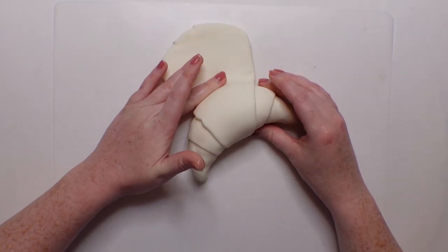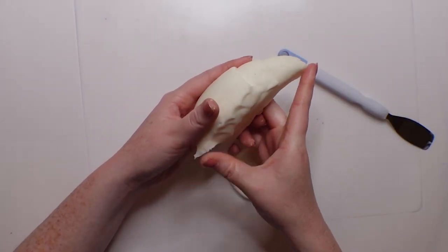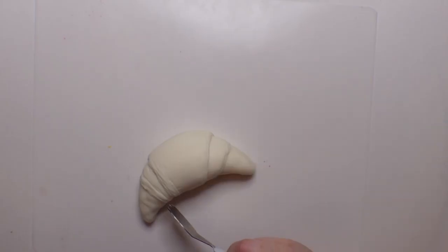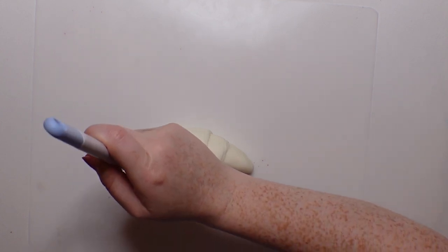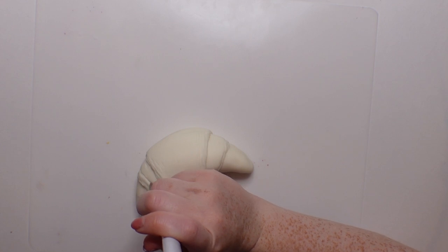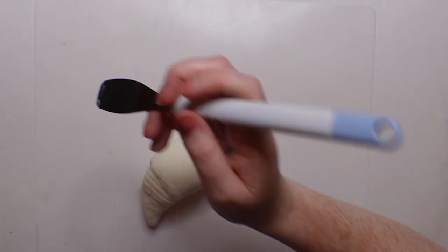Of course, every good croissant has layers. So I took this clay tool—you could also use a plastic knife or even a regular knife—and just started putting indentations into it to give the illusion of the layers.